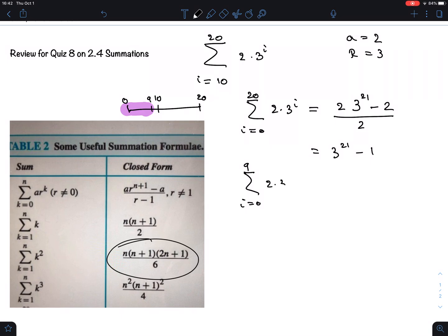We should also calculate from 0 to 9, sum of 2 times 3 to the i. That is the same formula: 2 times 3 to the power 10 minus 2 divided by 2. It's always in the formula 1 higher than the upper bound. Remember, if you divide out 2, it's canceling all the 2s. Dividing in a sum is always dividing each of the terms by the denominator.